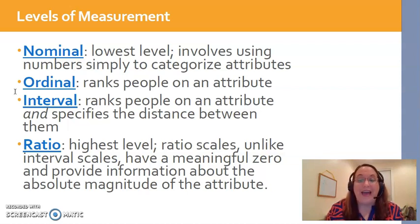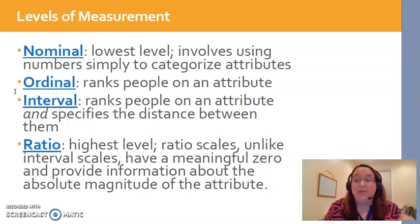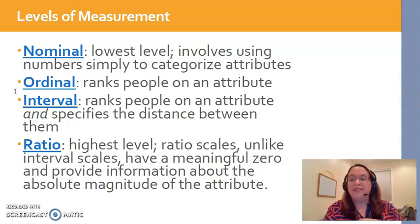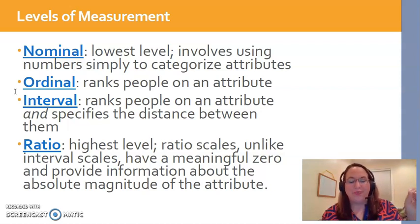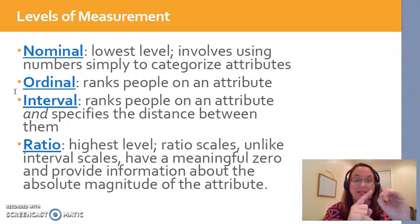Nominal and ordinal are categorical variables. However, interval and ratio are continuous variables, meaning those specific variables have numbers associated with them. A good example of interval is temperature. The key hallmark of an interval measure is that there is no absolute zero — that means an absence of this thing. You can have a temperature of zero, but that doesn't mean there's no temperature; it just means the temperature is zero and can go to negative 1, negative 2, etc. Ratio has a meaningful zero, so the scale starts at zero and works its way up, whereas interval does not have that zero point.